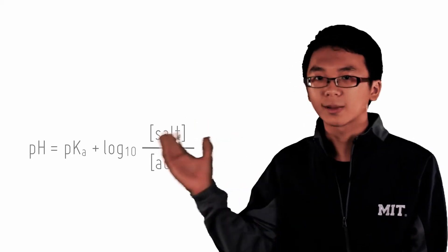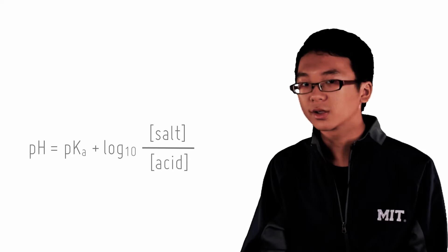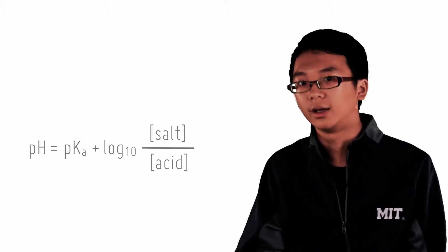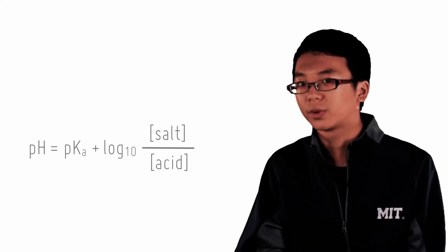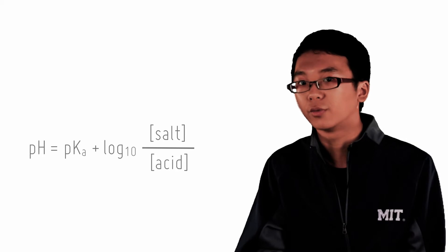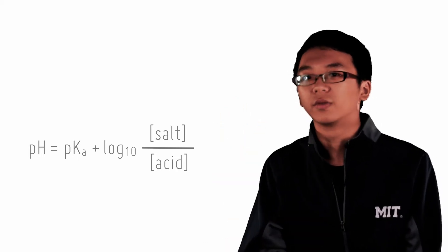Now we have just expressed the pH as something related to pKa, as well as the concentrations of salt and acid. This equation is very useful because often Ka or pKa is given to you in the question. And all that's left is simply to come up with the appropriate ratio of salt to acid so that we can get an acidic buffer with the desired pH.